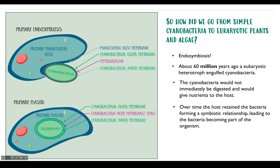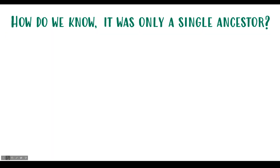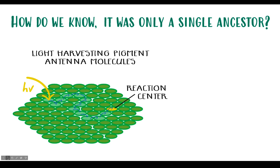This primary plastid has a double membrane, which is something you also see in mitochondria. It's a well-established theory as to how the chloroplast ended up inside eukaryotes. There's also a lot of molecular evidence showing that eukaryotic photosynthesizers came from a single eukaryotic ancestor.